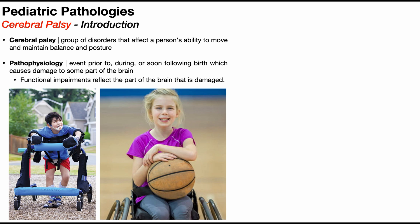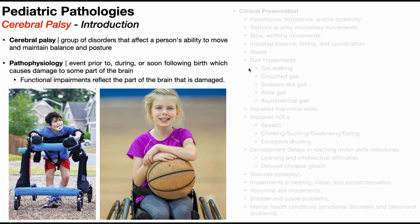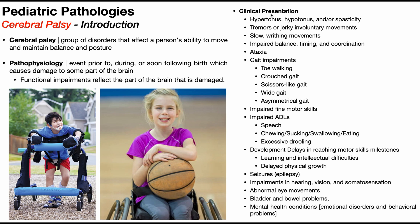Here's a list of some of the clinical presentations that people with CP will have. Even within a single bullet point — specifically with tone — there's a lot of variance. Hypertonus, hypotonus, and spasticity depend a lot on what part of the brain is affected and how severe it is. They can have tremors or jerky involuntary movements, slow writhing movements, and impaired balance, timing, and coordination — ataxia.